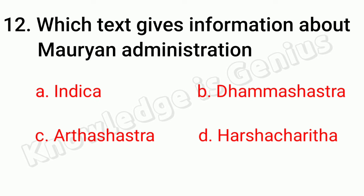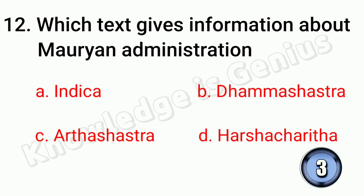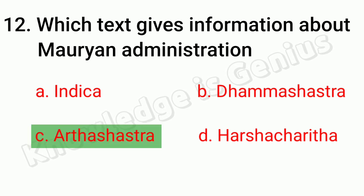Which text gives information about Mauryan administration? A. Indika. B. Dhamma Shastra. C. Artha Shastra. D. Harshacharita. Answer is C. Artha Shastra.